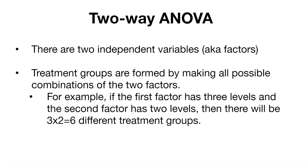We might call these two independent variables two different treatments. These treatment groups are formed by making all the possible combinations of the two factors. So if factor one has three levels and factor two has two levels, there will be three times two, or six, different treatment groups. This is really the importance of the two-way ANOVA — the interaction that we also need to take into account between the two different groups.